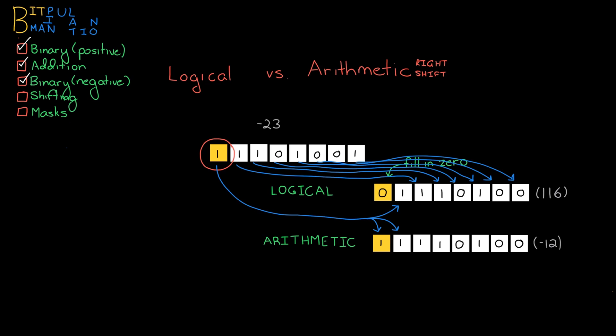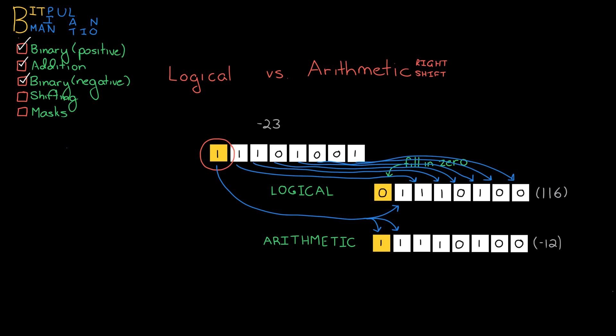So now we're on to our final topic: using masks to do things like getting a bit, updating it, and things like that. First, let's review some of the basics. When we AND two bits, we get a 1 only if both of those bits are 1. When we OR two bits, we get a 1 if either of those two bits are 1. And when we do an XOR, we need exactly one of those two bits to be a 1 — if both are 1s, we get a 0.